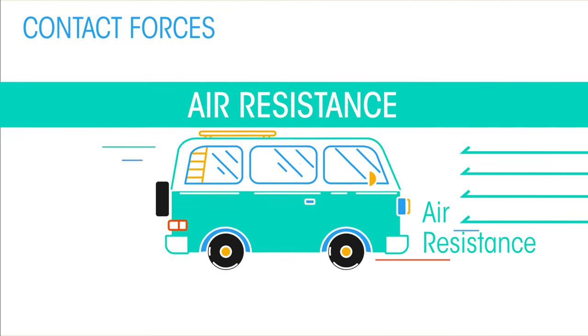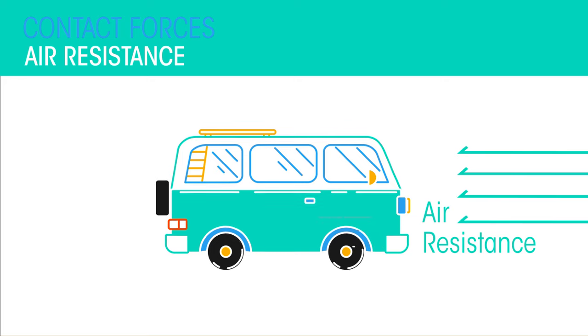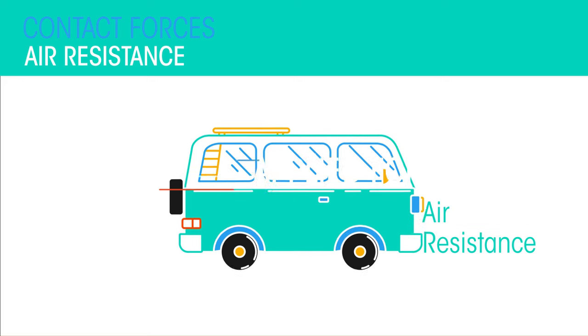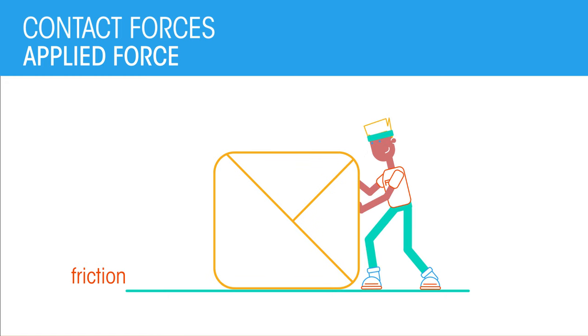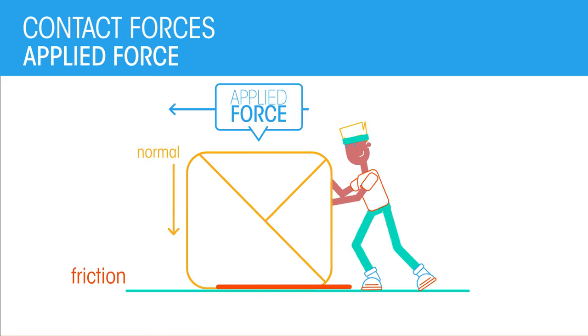Air resistance acts on a moving object through the air. The air particles slide over the moving object, slowing it down. Pushing that box across the room has friction, normal and applied force all at once.